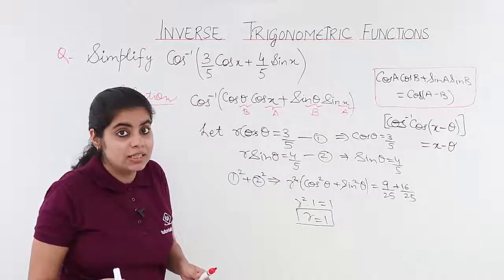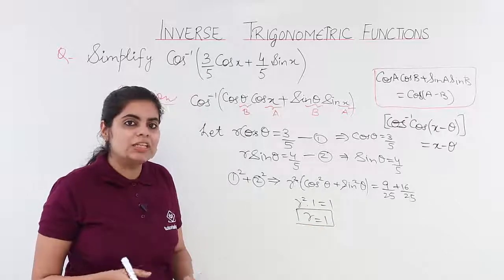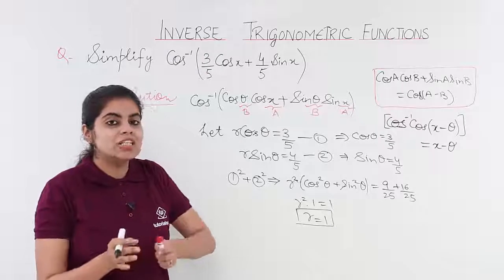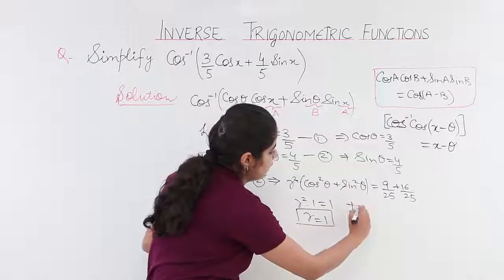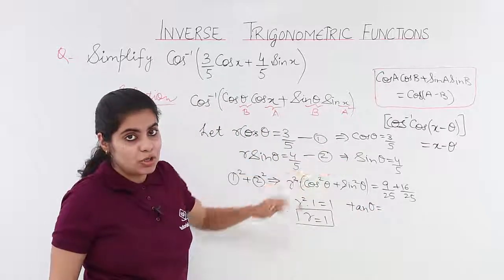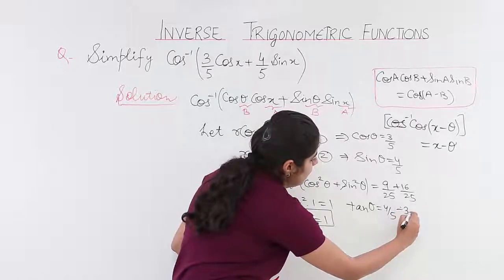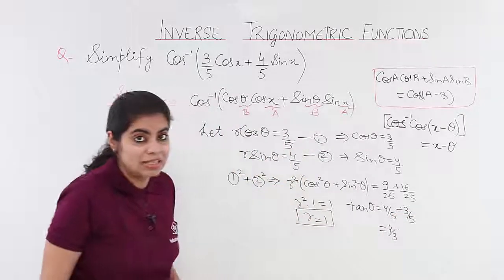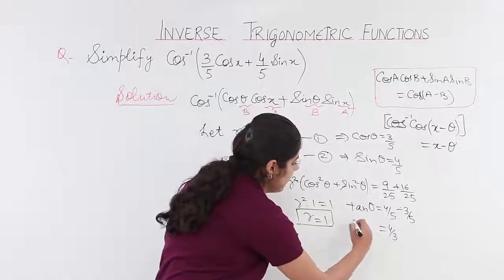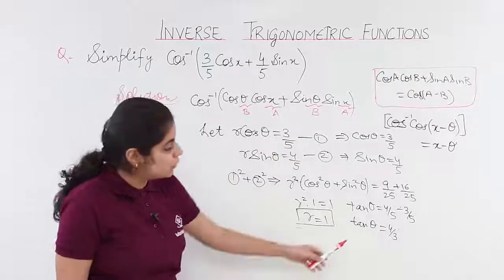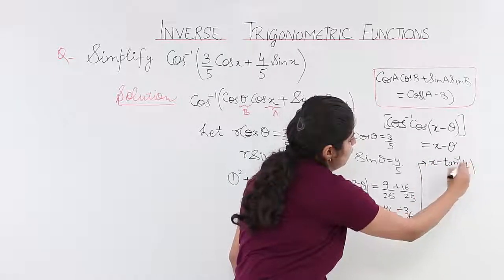Now x is known. What is θ? Theta is either cos inverse(3/5) or sin inverse(4/5), but it is better to write θ as tan inverse, since it involves both sin and cos. tan θ = sin θ / cos θ = (4/5) / (3/5) = 4/3. So θ = tan inverse(4/3). Substituting back, the final answer is x − tan inverse(4/3).